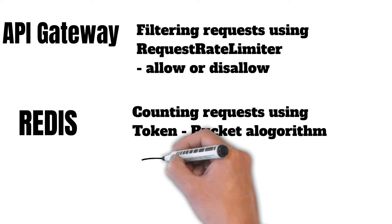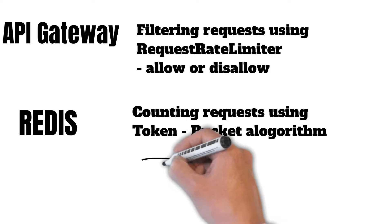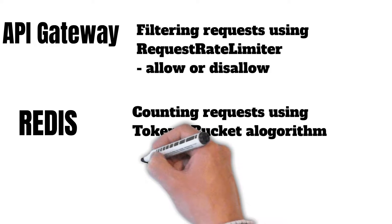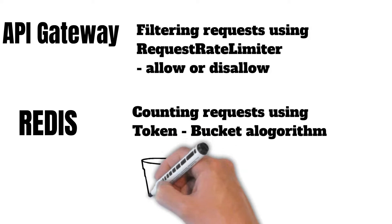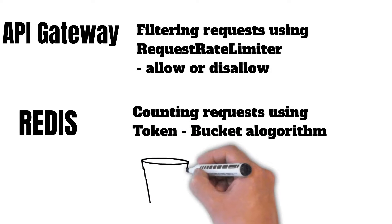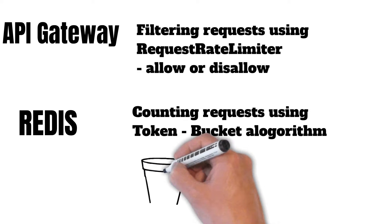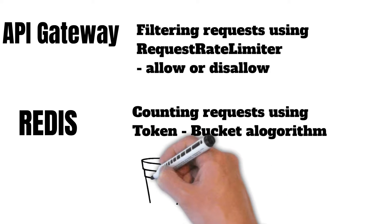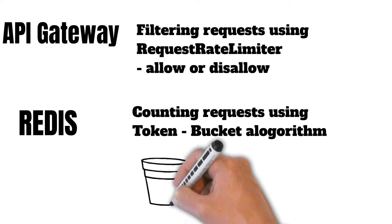In the token bucket algorithm, tokens are added for every request for that particular client in that client's bucket. We can then keep a check on how many tokens are allowed in a bucket for a particular client.